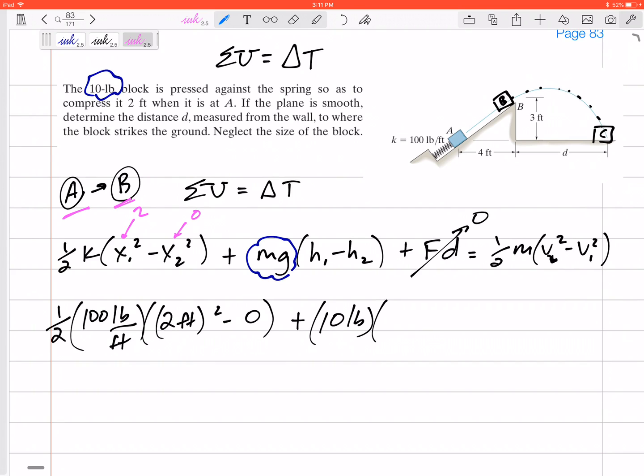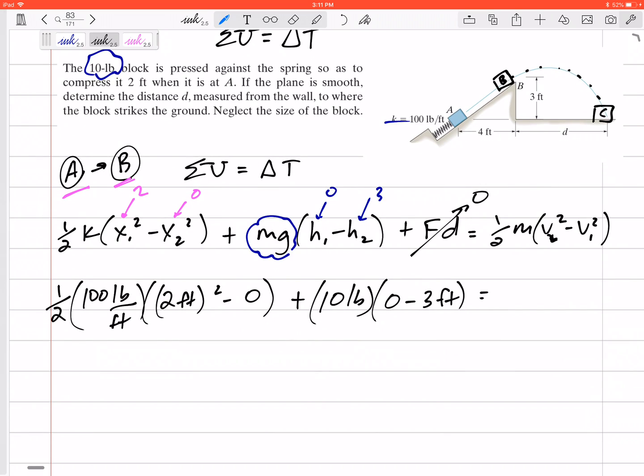So going from A to B, initially, let's call this our zero height, and final, so initial, that would be zero, and final, three feet. So zero minus three feet, let's be careful with what goes first, minuses and pluses. So that's what we have on the left-hand side of our equation.